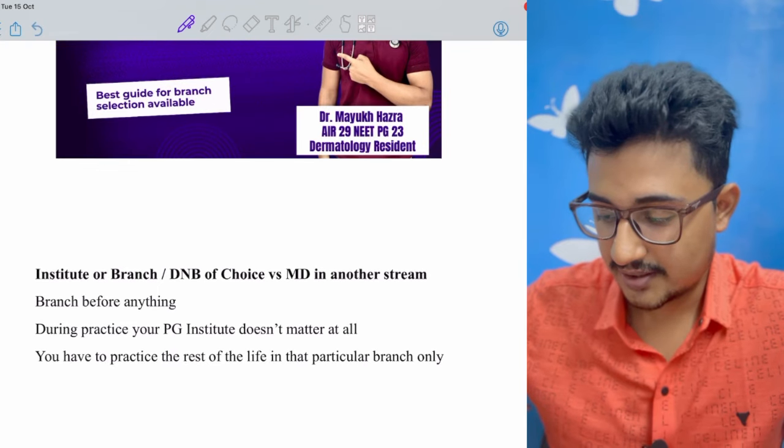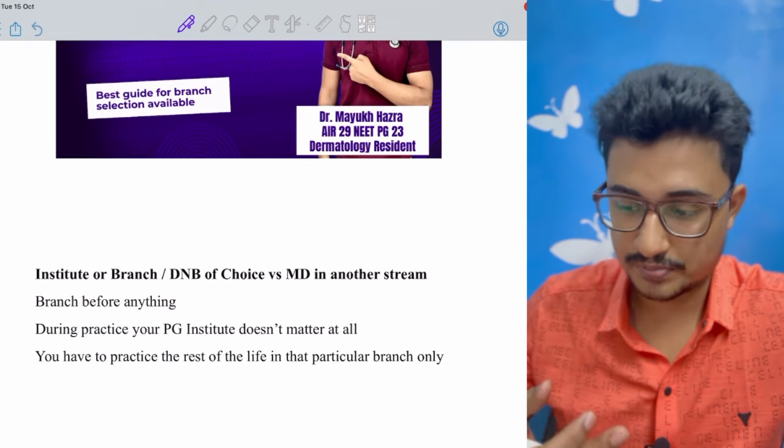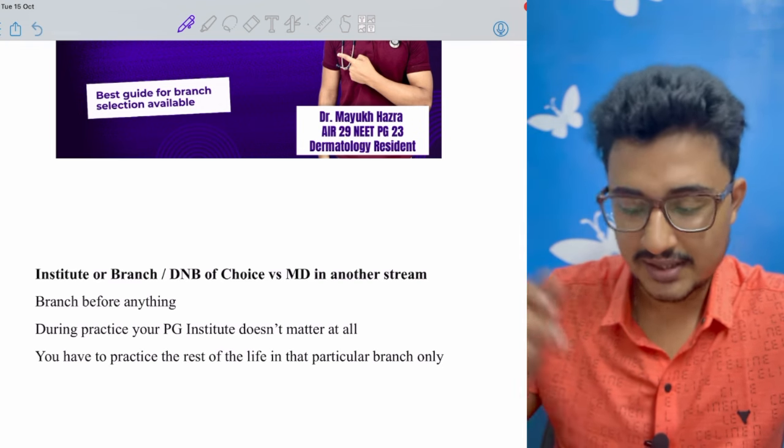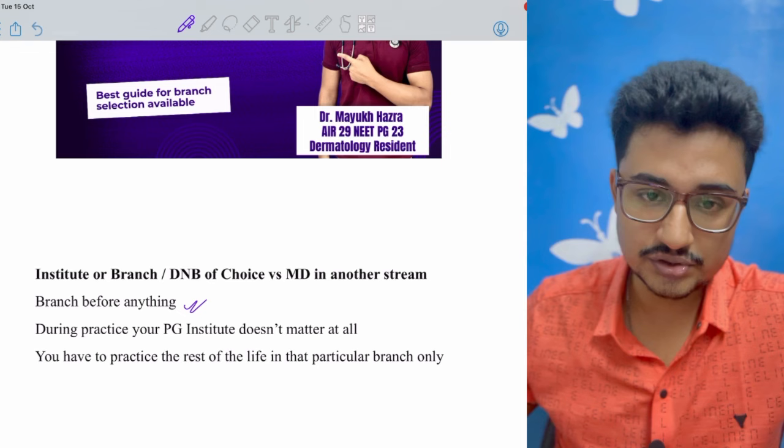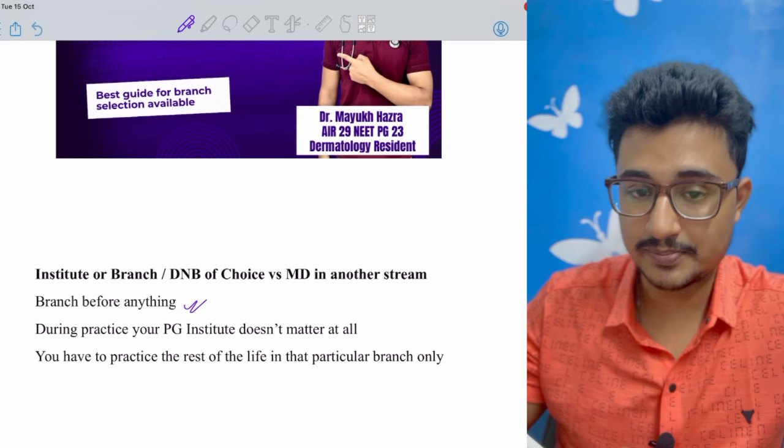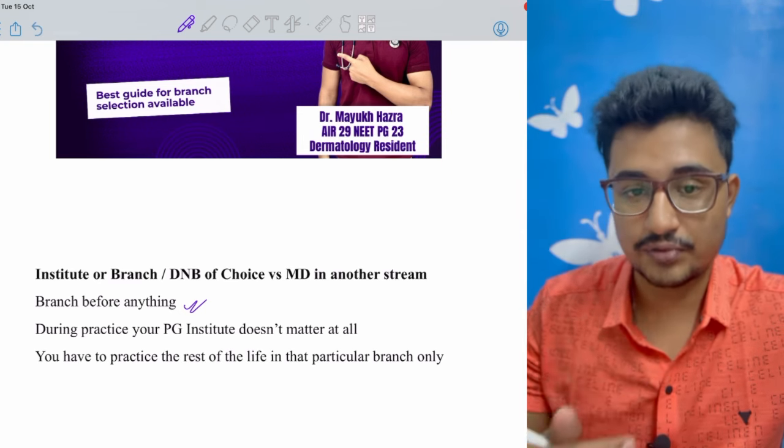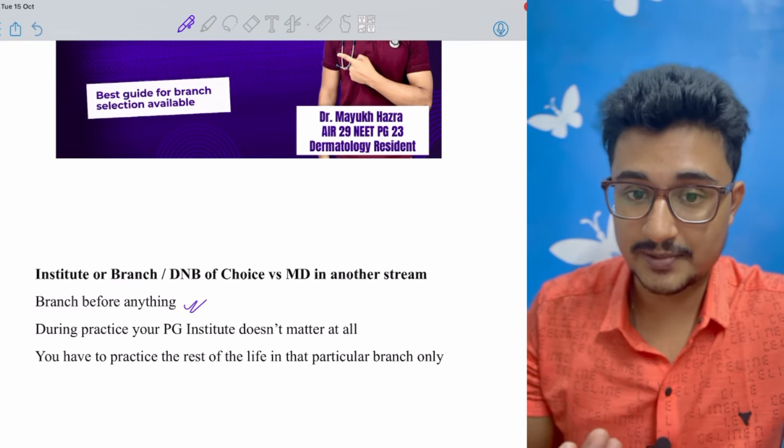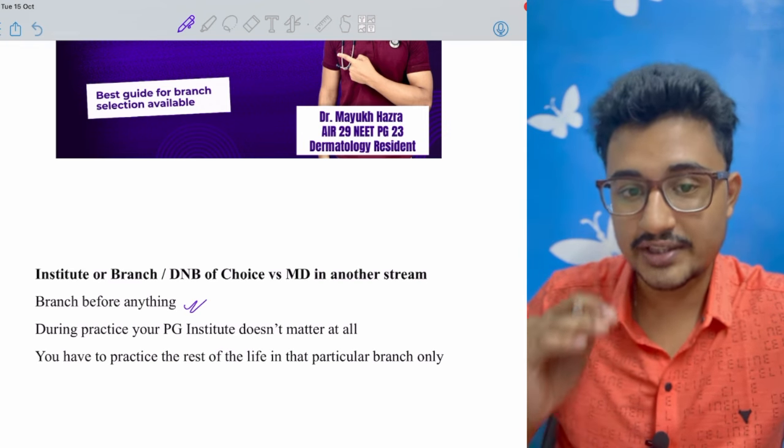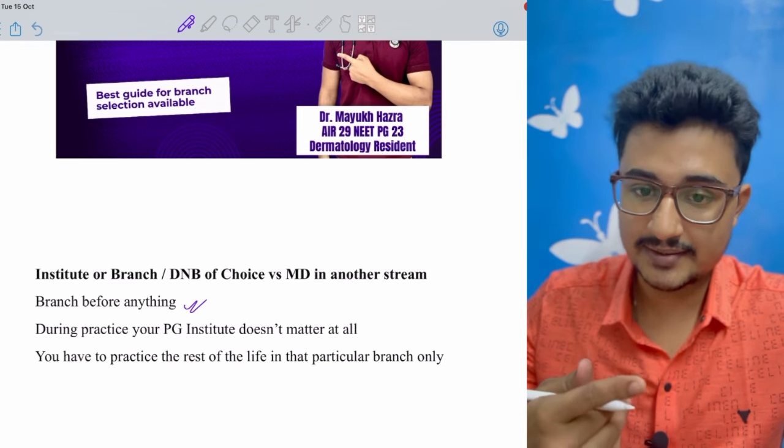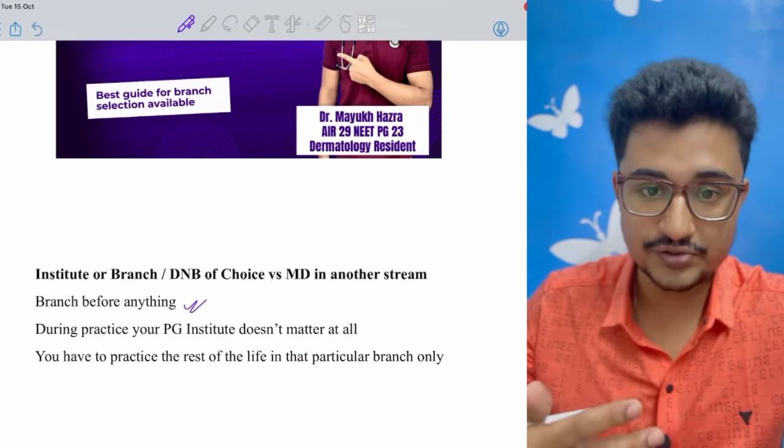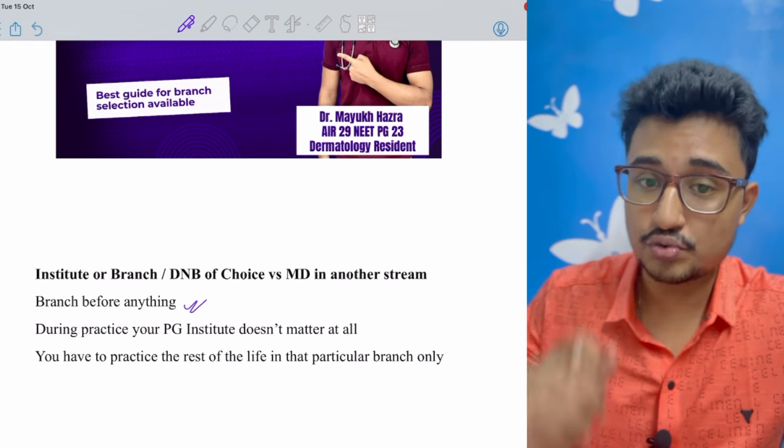Now institute or branch which you should prefer, or DNB in a subject of choice or MD in a different subject? In this case, branch over anything. Because with the branch you have to remain for the rest of your life. When you are going to a chamber, no patient is going to ask you that sir from which institute you have completed or maybe you have done MD or DNB. That doesn't matter at all during your practice life. Your skills matter and you have to keep that subject and practice that subject for the rest of your life. So branch is super super important, much more important than the institute or MD.